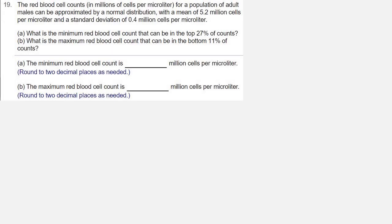The red blood cell counts in millions of cells per microliter of a population of adult males can be approximated by a normal distribution, with a mean of 5.2 million cells per microliter and a standard deviation of 0.4 million cells per microliter.